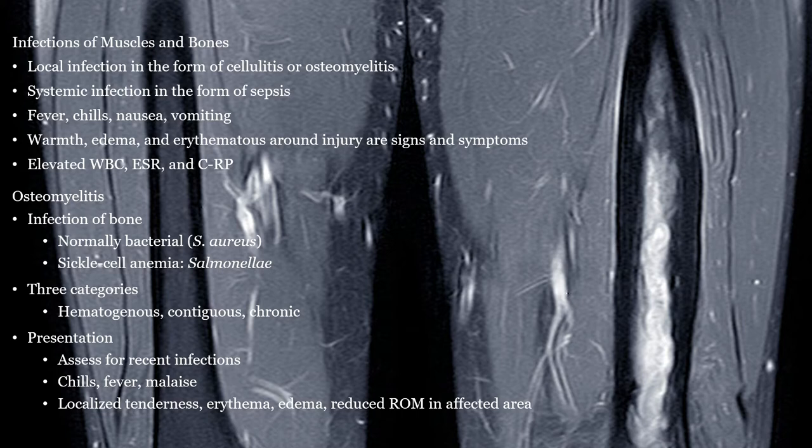Muscle and bone can become infected. If muscle is involved, it is cellulitis or myositis. But if the infection gets into the bone, it is termed osteomyelitis. In this MRI of bilateral femurs, you can see chronic osteomyelitis in the patient's left femur. Osteomyelitis requires several weeks of IV antibiotics. Signs of cellulitis include swelling and erythema, but signs of osteomyelitis may just be bone pain. A common pathogen of osteomyelitis is Staphylococcus aureus, and it can be dormant for a time before showing up as an infection.